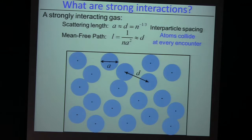But of course, in such a situation where we have blown up the scattering length to on the order of the interparticle spacing, then the atoms collide at every encounter. It's a very strongly interacting gas. And of course, as you know, in quantum mechanics, the scattering length even diverges, changes sign, and all these magical things, which we can actually do using a Feshbach resonance.